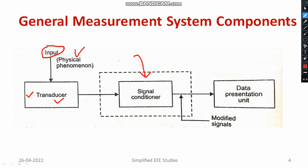If you look at the output of the signal conditioning device, we have written it as 'modified signal.' That means it may be amplified or the level may be shifted, the noise might be mitigated or avoided, and the EMI issue has been resolved. That will be the output of the signal conditioning device. Thereby, the signal conditioning device output can be sent to a data presentation unit such as a CRO, a computer, or whatever it may be — the signal is getting strengthened and modified.